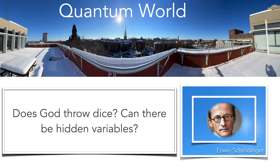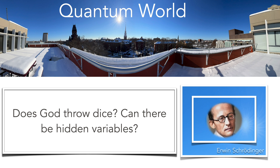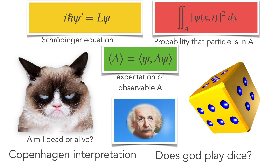Probabilistic interpretations also arise in quantum mechanics, where particles can be in superpositions and quantities like the position of a particle are given by expectations in a probability space. A quantum mechanical wave moving by the Schrödinger equation gives a formula for the probability that the particle is in a given region. Einstein was not very happy with quantum mechanics and asked, does God play dice? And there is also the Schrödinger cat, which doesn't know whether it is dead or alive.